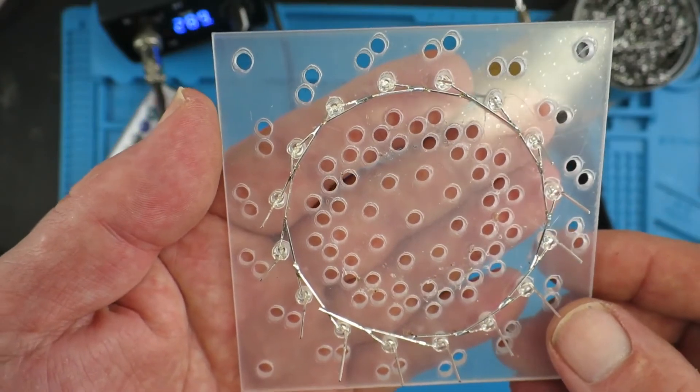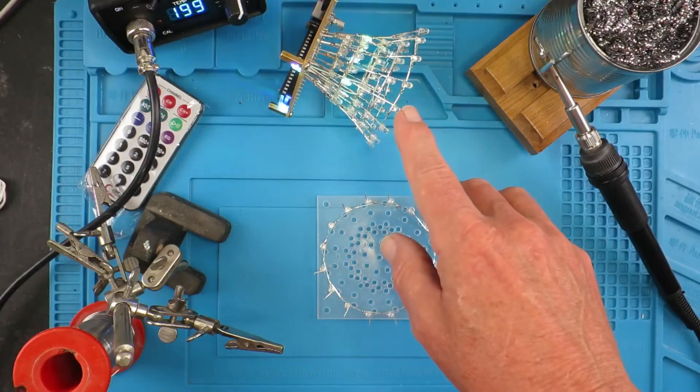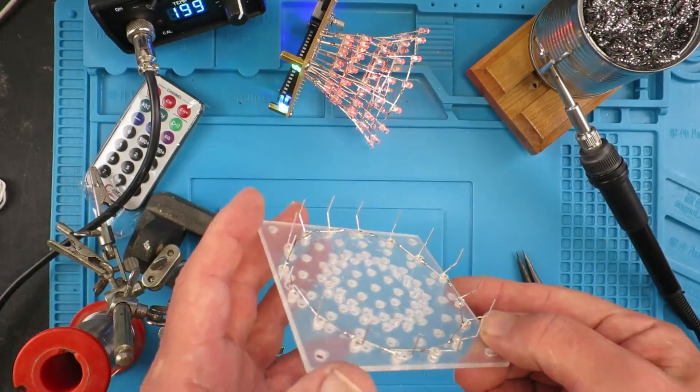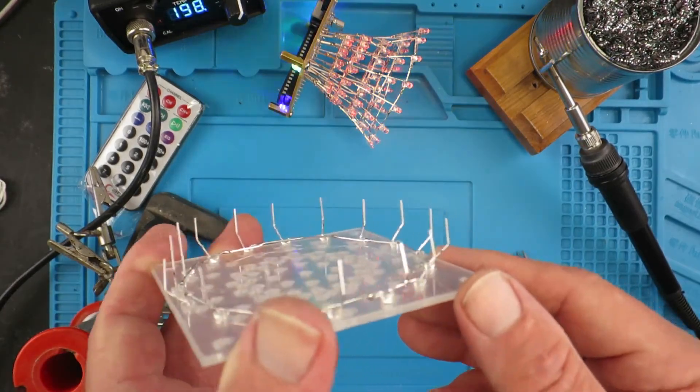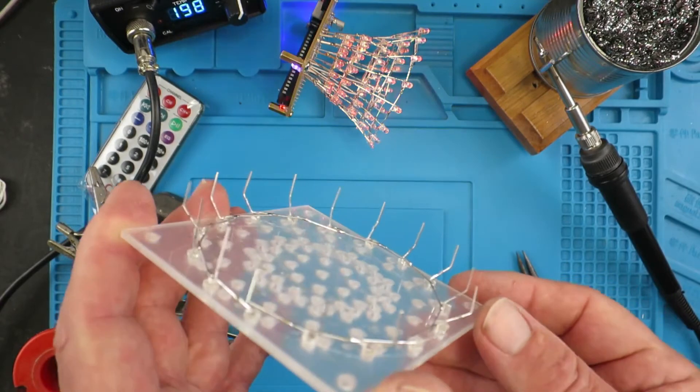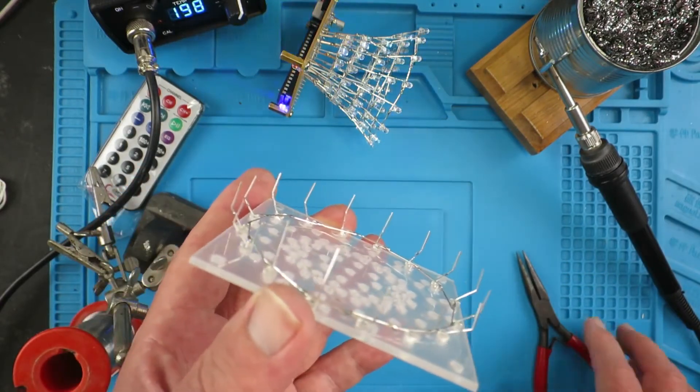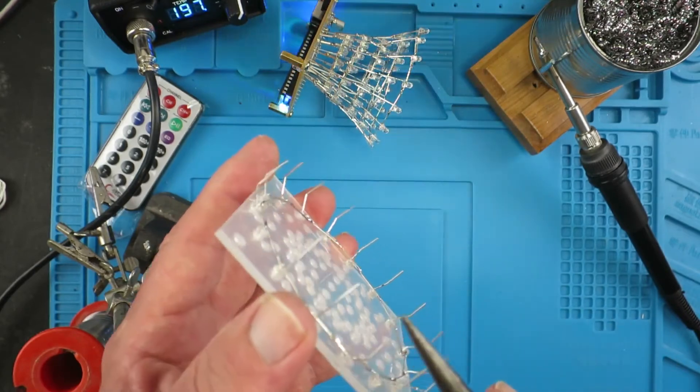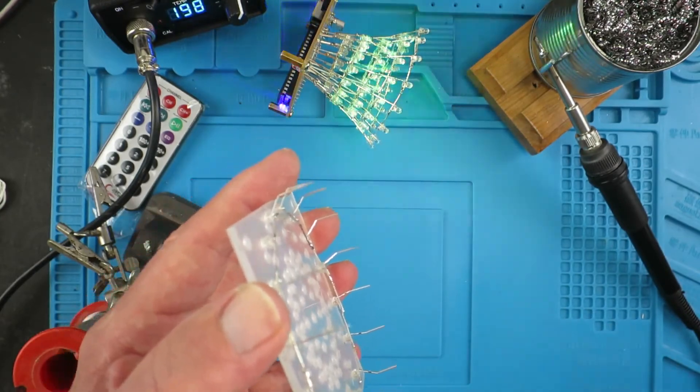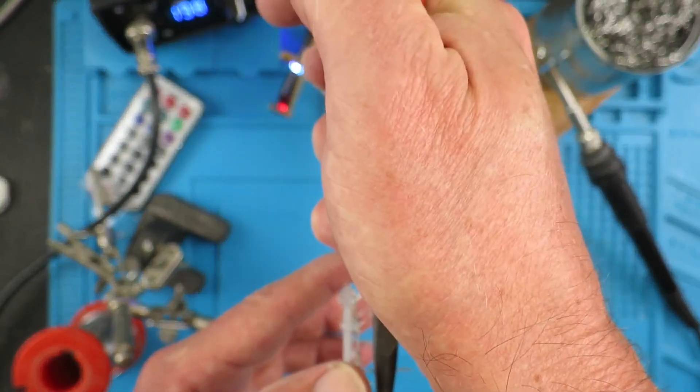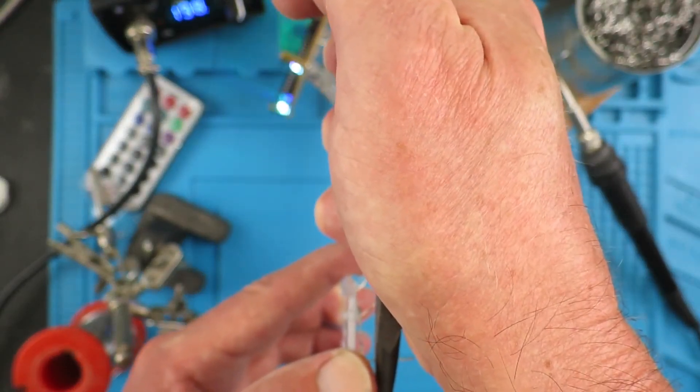We've done five layers now and the sixth layer is a little bit different in as much as we have to bend the legs out. That's the same for the next two layers after this as well. Simply with a pair of pliers, try and get it about the right height and just gently bend that up.